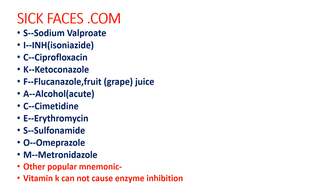SICKFACES.COM includes more drugs: S = Sodium Valproate; I = INH, Ciprofloxacin; K = Ketoconazole; F = Fluconazole and Fruit juice (grape juice); A = Acute Alcoholism. Remember: chronic alcoholism is an enzyme inducer, while acute alcoholism is an enzyme inhibitor; C = Cimetidine; E = Erythromycin.